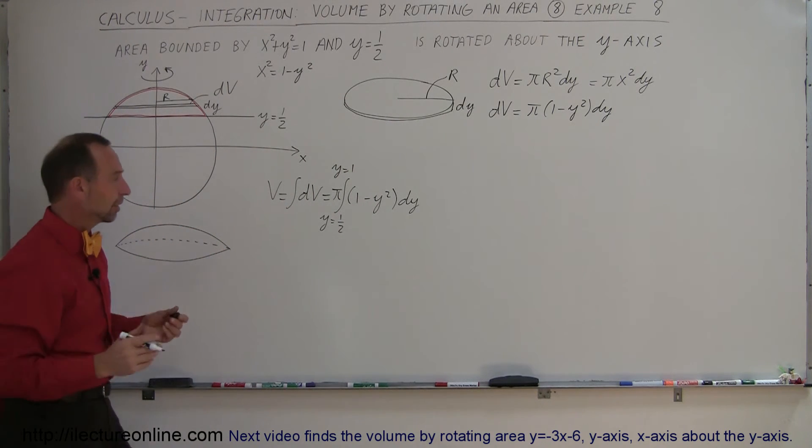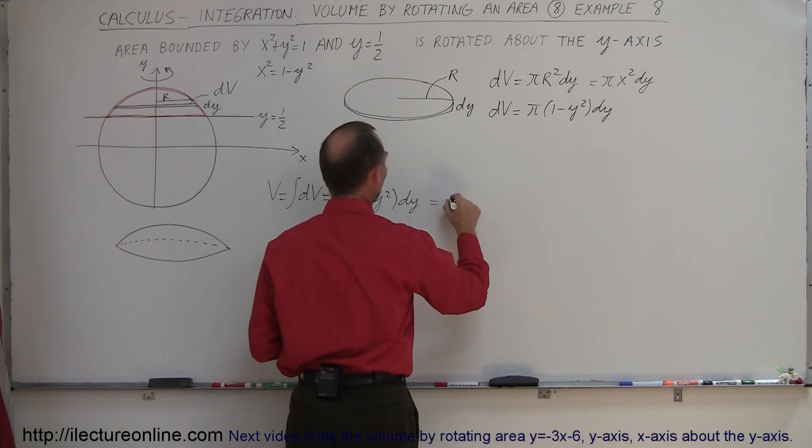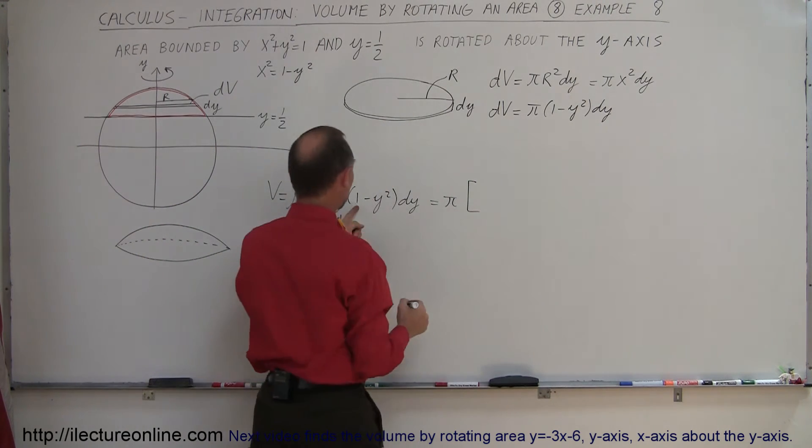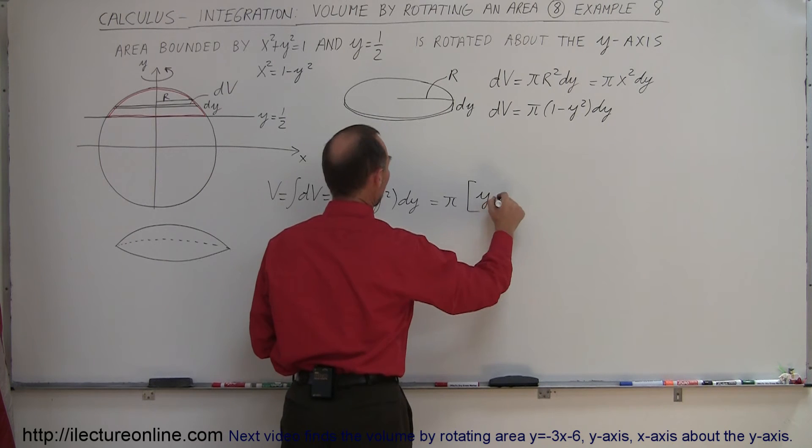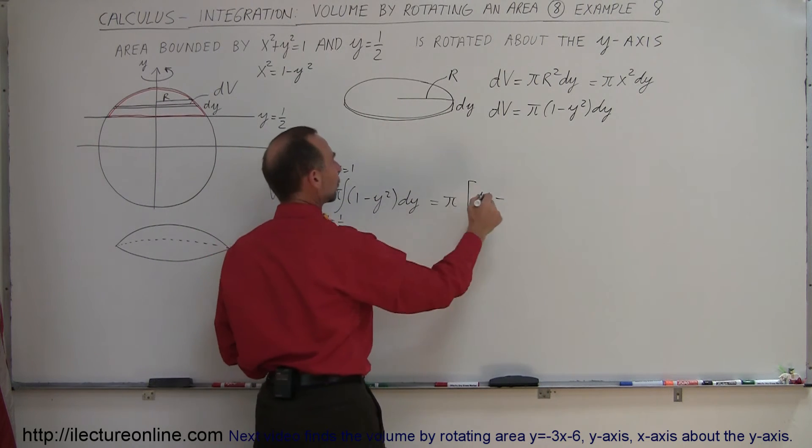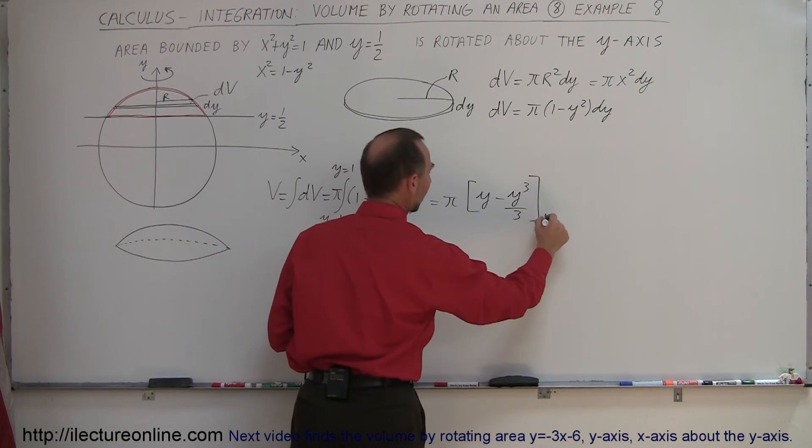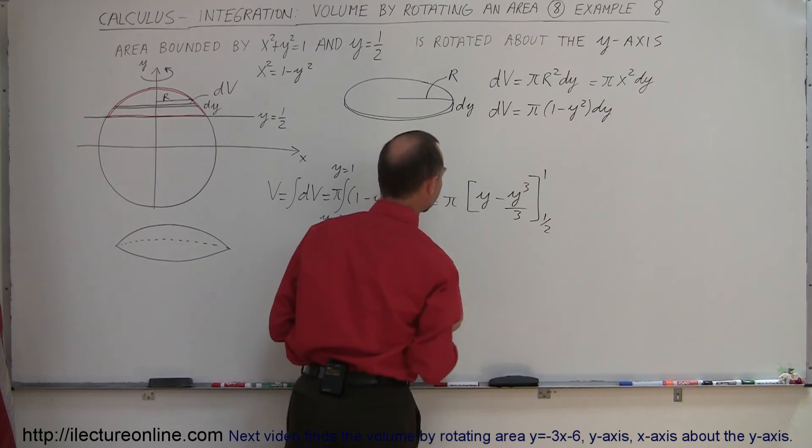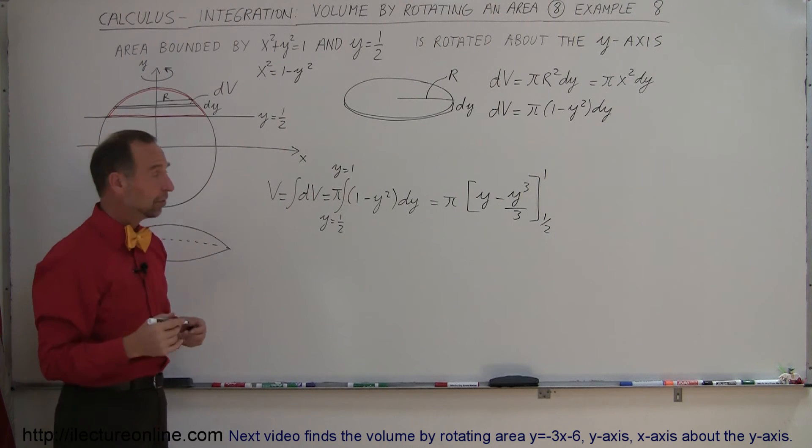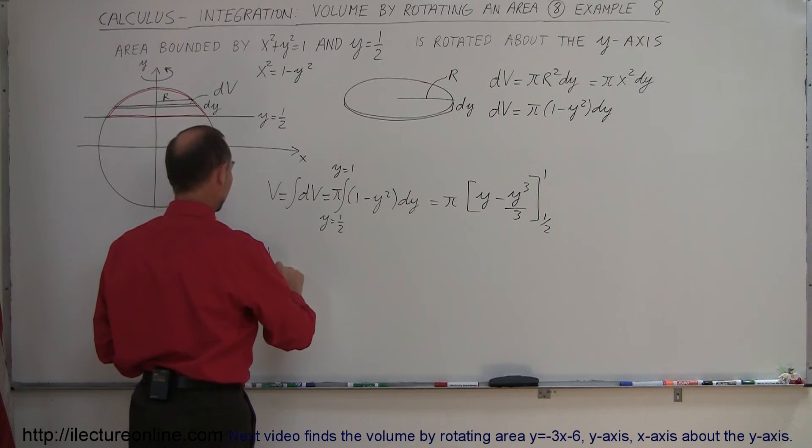That's a fairly easy integral to integrate, so let's go ahead and do that. This is equal to pi times, integrate 1 that becomes Y, minus integrate Y squared that becomes Y cubed divided by 3, and the integral limits are 1 half to 1.